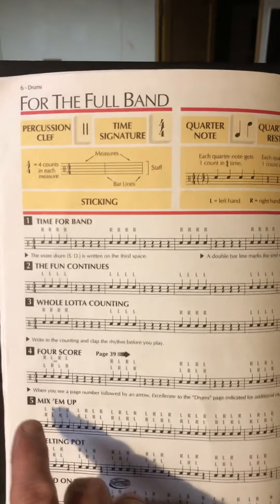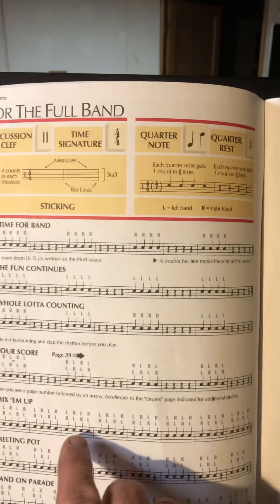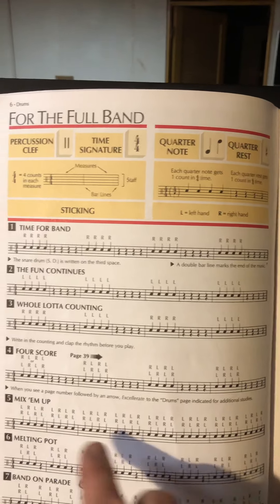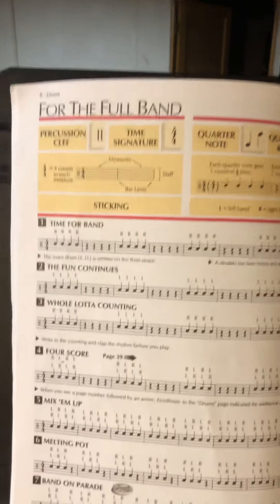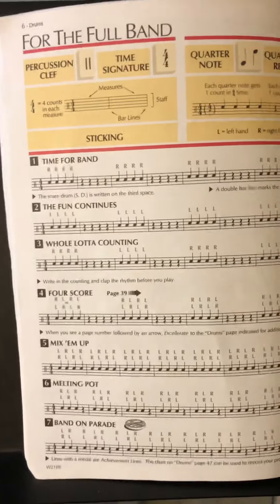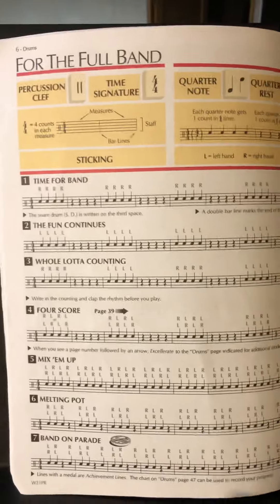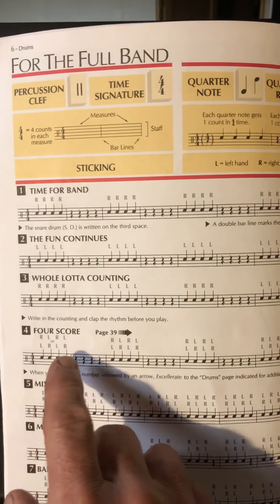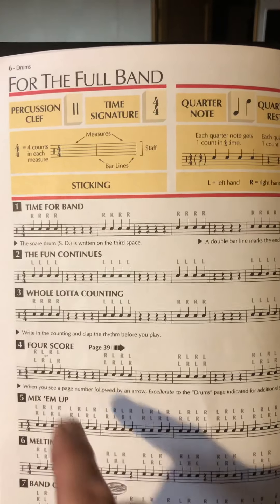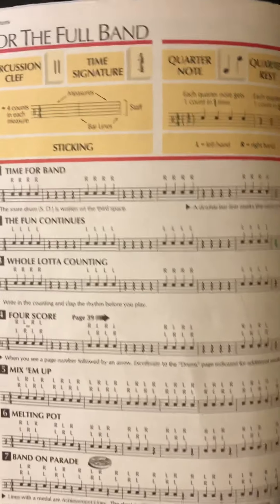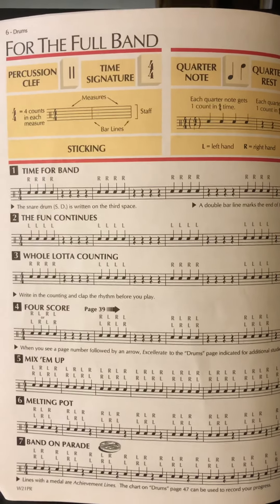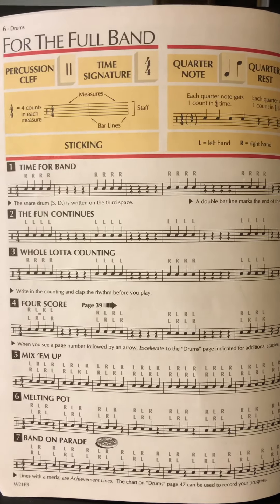In line number five, it's just continuous notes — no rests at all. You really have to keep track. One of the things I always tell students, especially with drumming, is you want to look at each note and each rest as you say it and as you play it. If you do that, you won't lose your spot, and you'll find it's very easy to play.